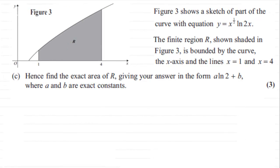In this last part of the question, we've got to find the exact area of R, giving our answer in the form A multiplied by the natural log of 2 plus B, where A and B are exact constants. Pause the video if you haven't done this already, then come back to check your solution with mine.